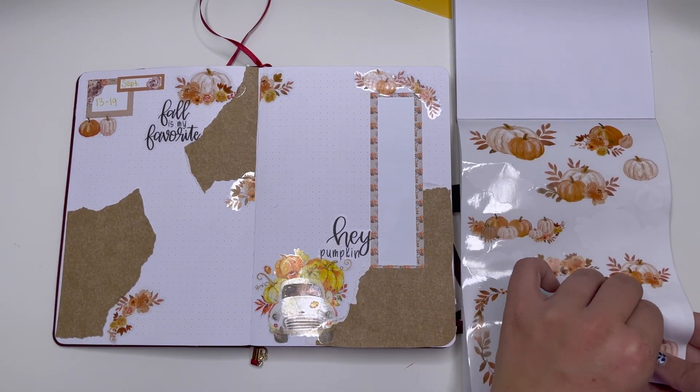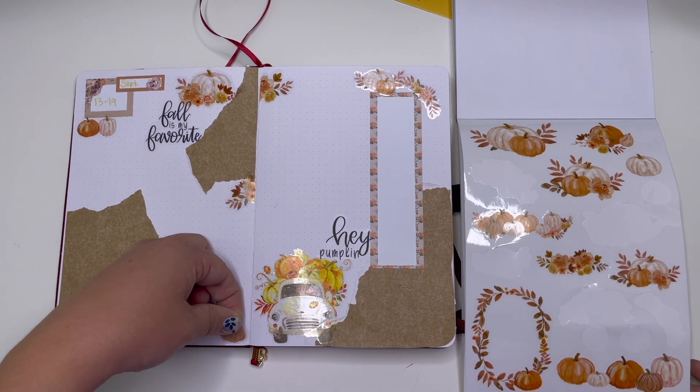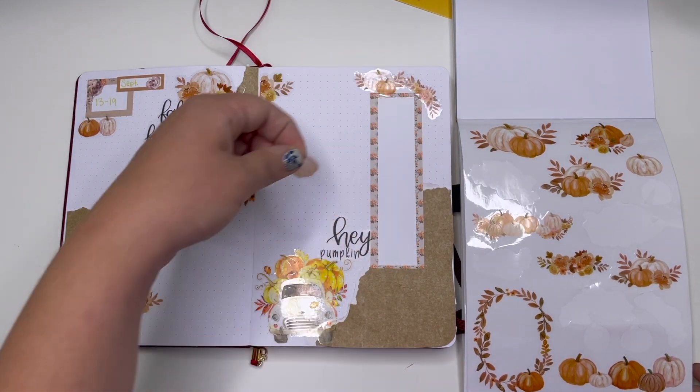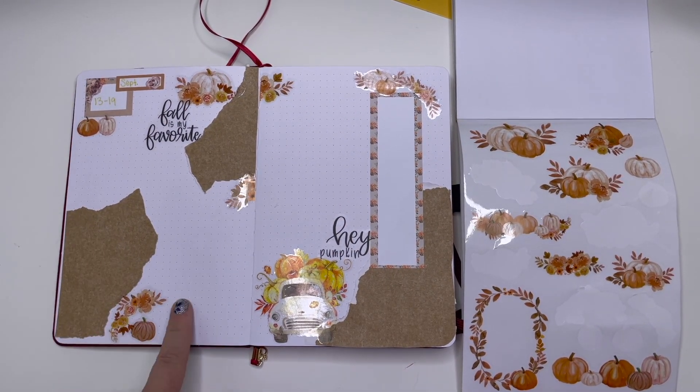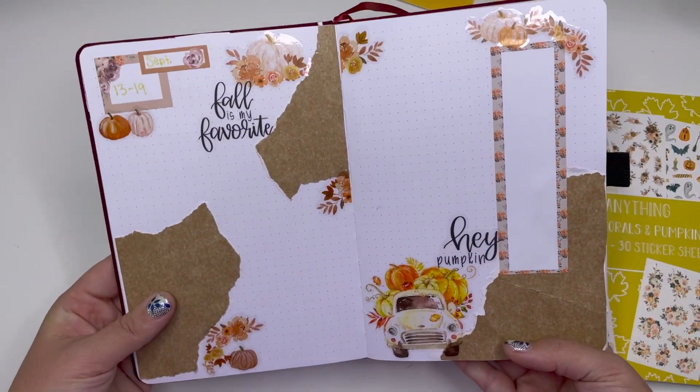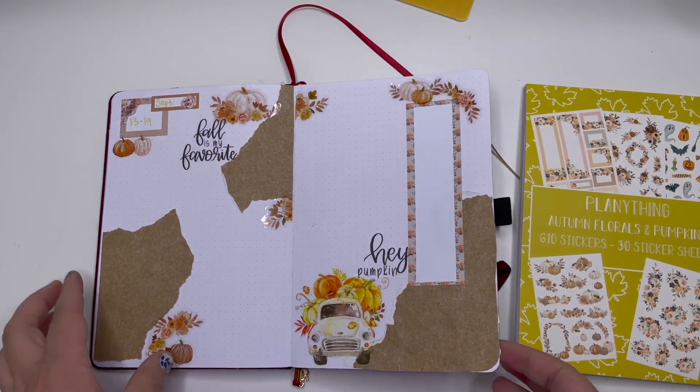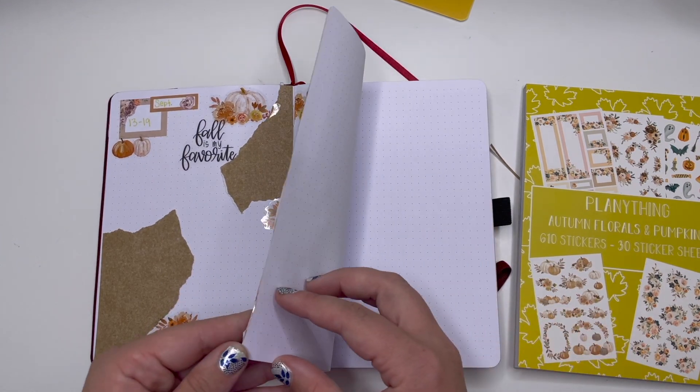And then maybe a pumpkin down here too. I changed my mind, regret my decision. Maybe just down here by this floral. Cute. Okay, I think we're done then. I like that. I like that a lot. I've so been loving, like this is just a totally different kind of creative challenge for me.